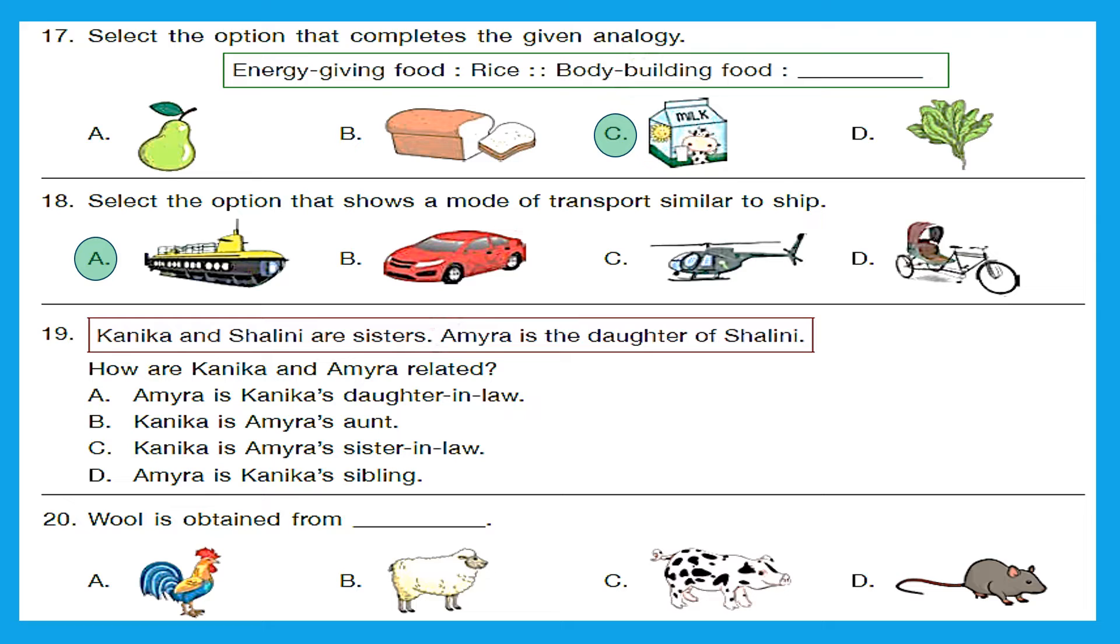Question 19. Kanika and Shalini are sisters. Amyra is the daughter of Shalini. How are Kanika and Amyra related? Very simple, Kanika would be Amyra's aunt. So option B is the right answer. Question 20. Wool is obtained from? So we have hen, sheep, pig and rat. Out of these options, option B is the right answer. Wool is obtained from sheep.